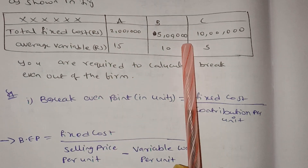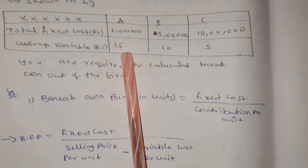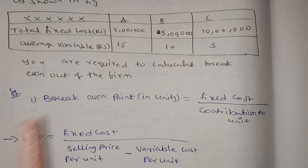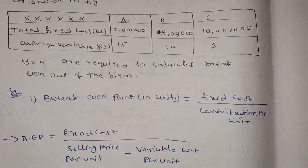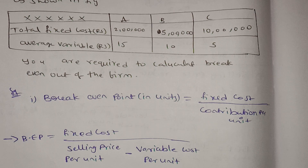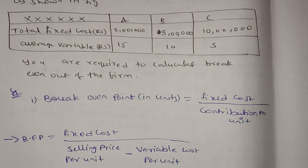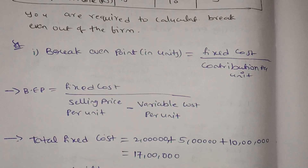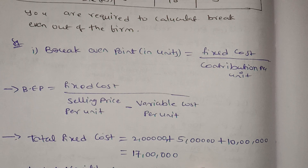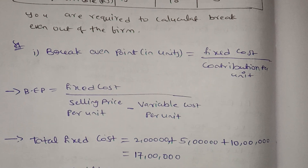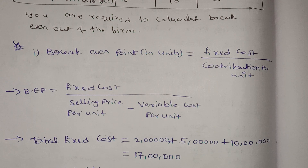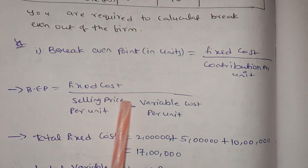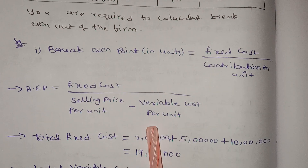The total fixed costs are 2 lakhs, 5 lakhs, and 10 lakhs. The average variable costs are 15, 10, and 5. The break-even point formula is: fixed cost divided by selling price per unit minus variable cost per unit.